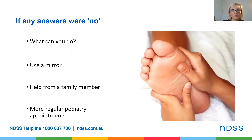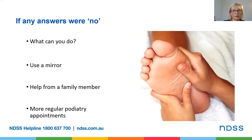If any of the answers to the last slide were no, have a think about some things that you could use to help you care for your feet. For example, to see the bottom of your feet you can use a mirror. Extendable mirrors on poles are available to help you look under your feet without bending too far down. Another option would be to use mirrored wardrobe doors or other mirrors in your home. Don't forget your family — a partner, sibling or child can often help out too. Another option may be to take photos with your mobile phone and zoom in to see the photo close up. If none of these options are available, you may consider more regular podiatry appointments which you can access using your care plan from the GP.